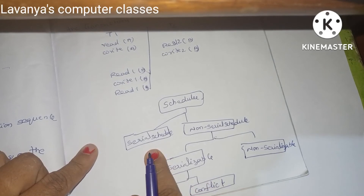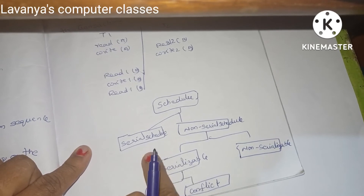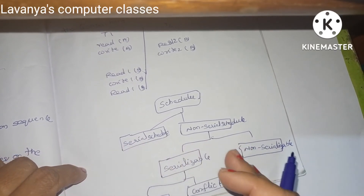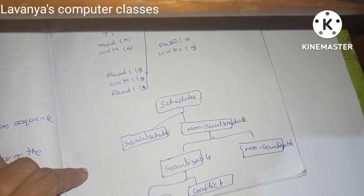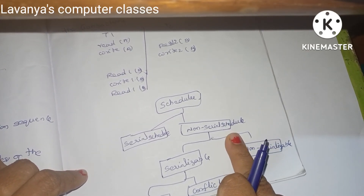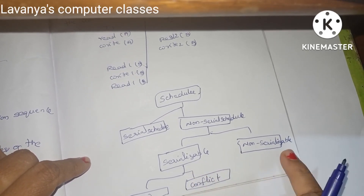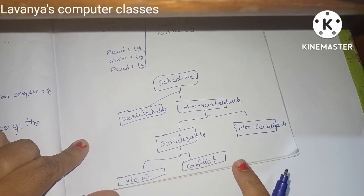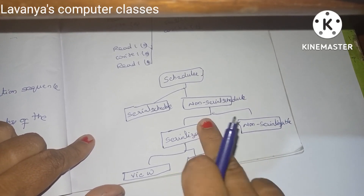There are two types of schedules: serial schedule and non-serial schedule. In serial scheduling, you do not face any problems because transactions are executed one after another without conflicting. Problems arise in non-serial scheduling only. In non-serial scheduling, we go further into serializability and non-serializability, which includes view serializability and conflict serializability — concepts that will be explained in the next video.